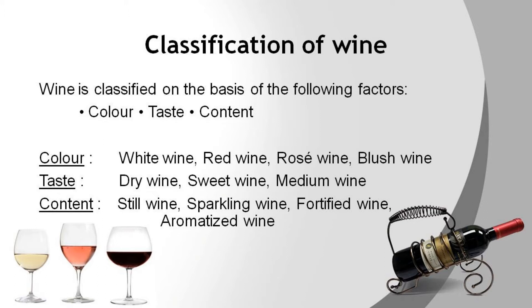According to the content, wine is classified as still wines, sparkling wines, fortified wines, aromatised wines, and tonic wines. Still wine is obtained by the natural fermentation process without adding anything else. The carbon dioxide produced during fermentation is allowed to escape. This type of wine is also termed as table wine. The alcoholic content is 10 to 14%. Cabernet Sauvignon is one of the most popular table wines.